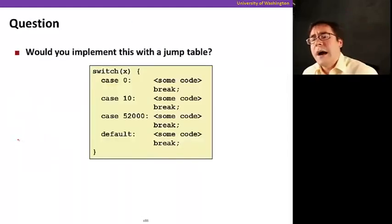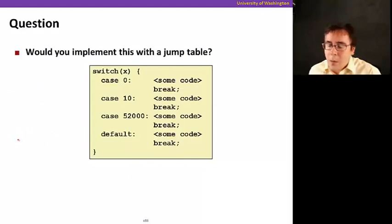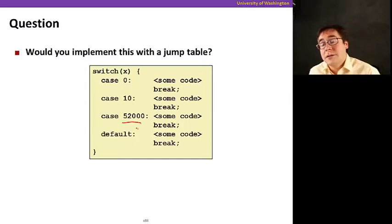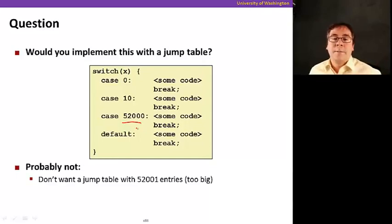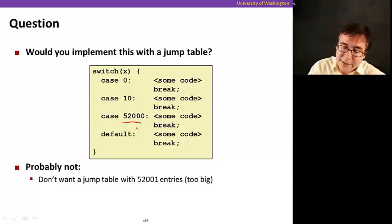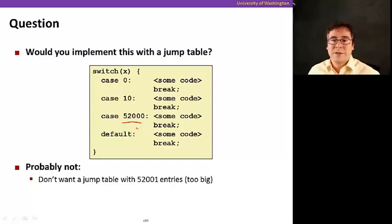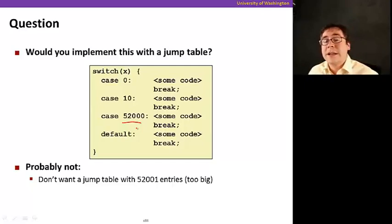Now let me ask you a question: would you implement this one with a jump table? Well, look at the size of this value here — probably not. This table would be very, very large. Jump tables are normally used when you have few case values and can build a small table. In this case here, it would be much more efficient to implement this with branch instructions. So now we conclude our x86 assembly programming section, and I'll see you next time.